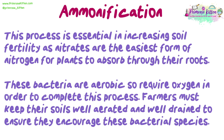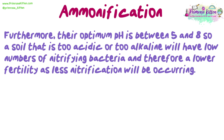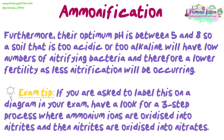Farmers must keep their soils well aerated and well drained to ensure they encourage these bacterial species. Furthermore, their optimum pH is between 5 and 8, so a soil that is too acidic or too alkaline will have low numbers of nitrifying bacteria and therefore lower fertility as less nitrification will be occurring. Exam top tip: if you are asked to label this on a diagram in your exam, look for a three-step process where ammonium ions are oxidised into nitrites and then nitrites are oxidised into nitrates.